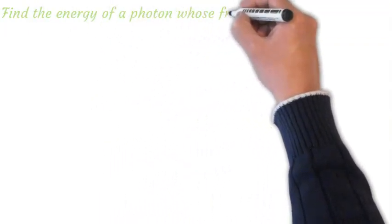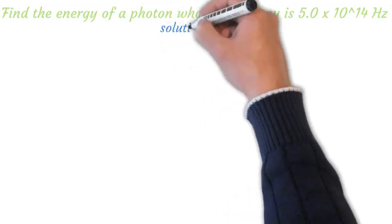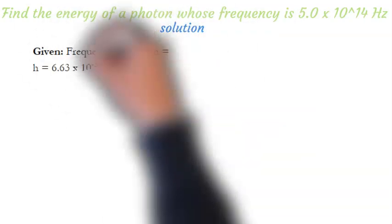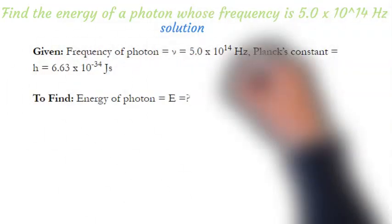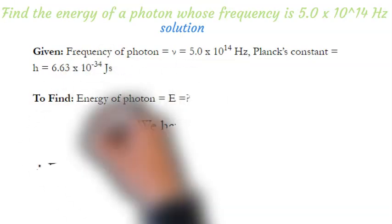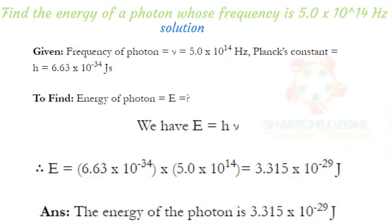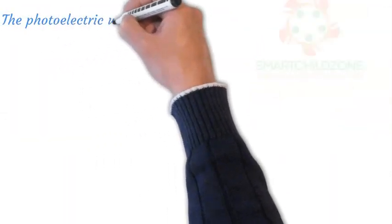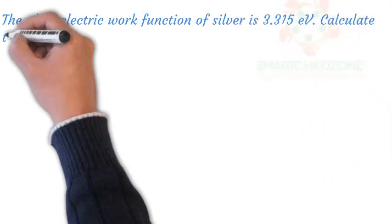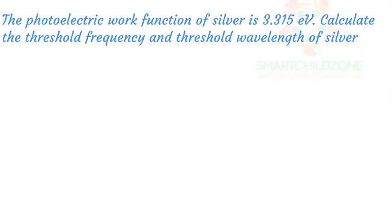Find the energy of a photon whose frequency is 5.0 × 10¹⁴ hertz. The photoelectric work function of silver is 3.315 electron volts. Calculate the threshold frequency and threshold wavelength of silver.